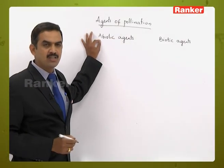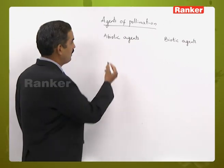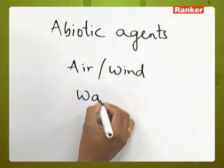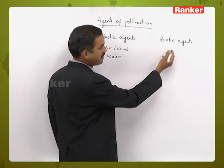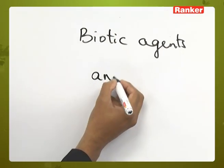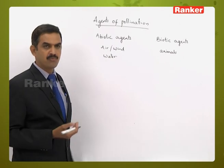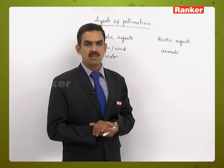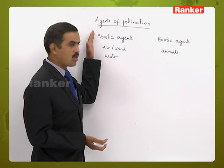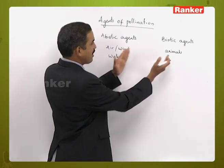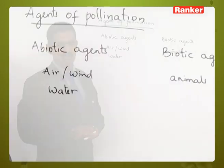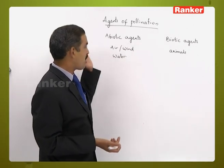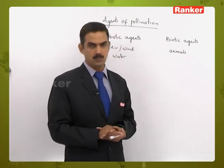Abiotic agents are those which help in cross-pollination but do not have life, such as air, wind, and water. Biotic agents are those which have life, like different types of animals and birds. Biotic agents are the most common type, while abiotic agents are observed in very specific plant species only.